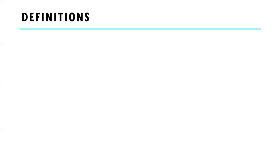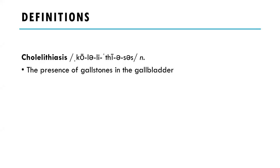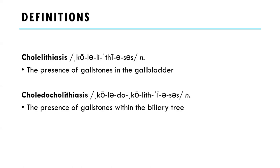We're going to start off with definitions. Cholelithiasis is the presence of gallstones in the gallbladder, while choledocholithiasis — where the 'docho' bit means the bile duct or the biliary tree — is the presence of gallstones within the biliary tree.